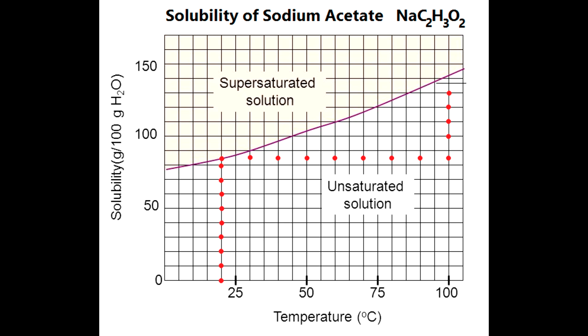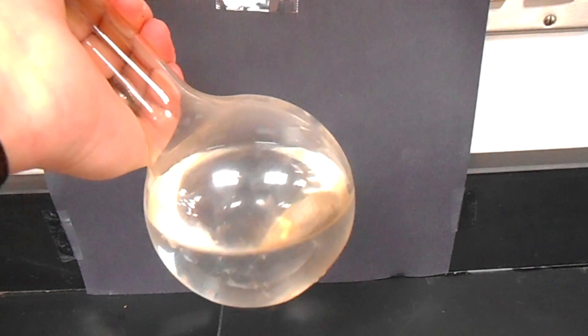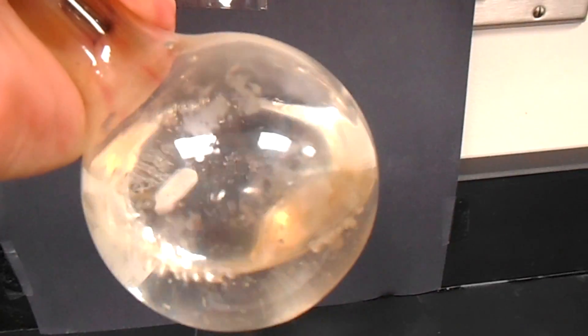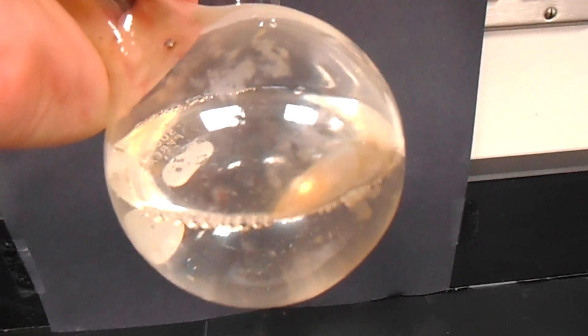Once we've got a saturated solution, some solutes — and sodium acetate is very good at this — can actually stay in solution as the solution cools. So we can get into this uncharted territory of a supersaturated solution and have a solution that contains more solute than it should be able to at room temperature. Now these solutions are very unstable, and you can see as I take this one and shake it around, if I shake it violently enough I can get that solution to break and get the solute to come out of solution. It's a pretty rapid process, and it's kind of amazing to watch.